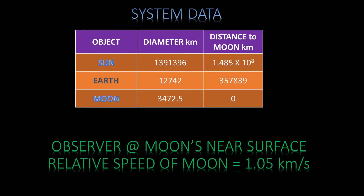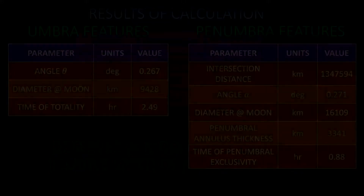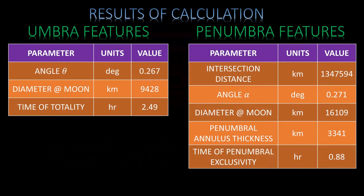Given the system data as shown, we can apply these equations and get the following results. Since the observer is on the moon's surface nearest to the earth, the moon's radius is subtracted from the distance. However, since a lunar eclipse takes hours, this is only an approximation. A lunar eclipse lasts for hours, while a solar eclipse lasts for minutes. This is because the occulting body in the case of a lunar eclipse is the earth, which is almost four times the diameter of the moon.